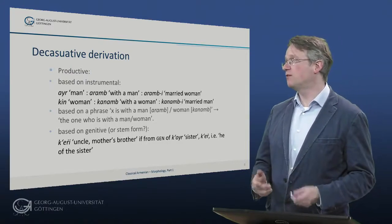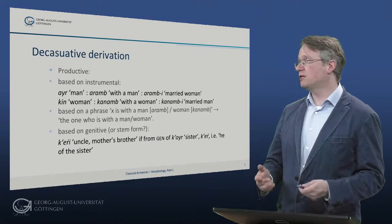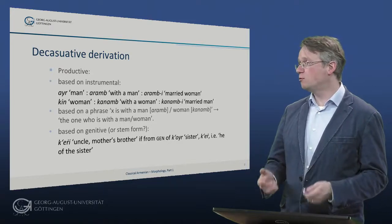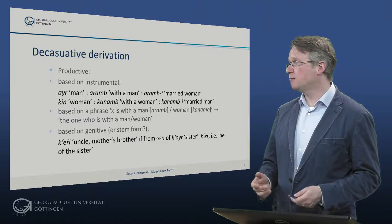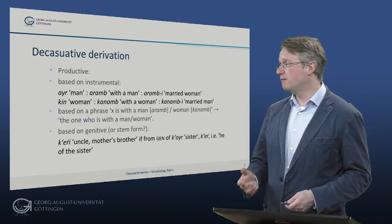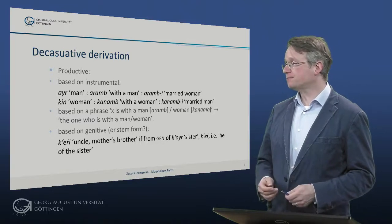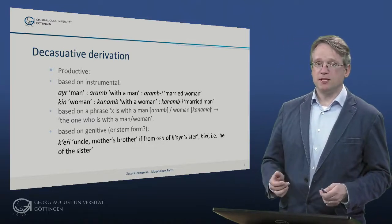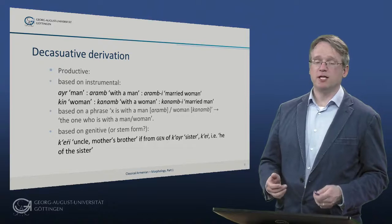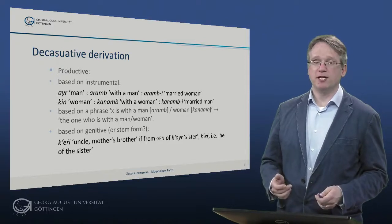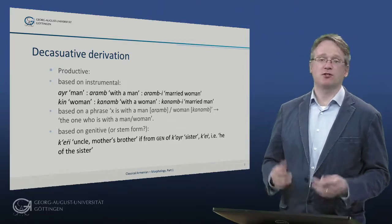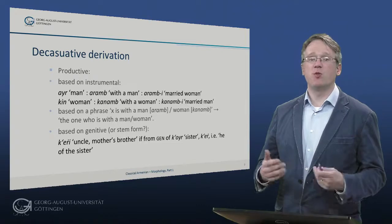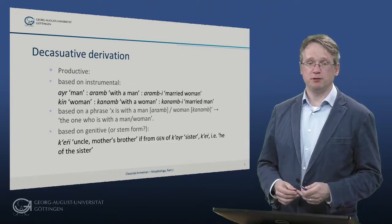The same goes the other way around. With kin – woman – we have kanamb, the instrumental case, meaning with a woman, and derived from that kanambi – married man. This may be understood as based on a phrase 'x is with somebody,' so either man or woman, and the noun as the one who is with a man or a woman.